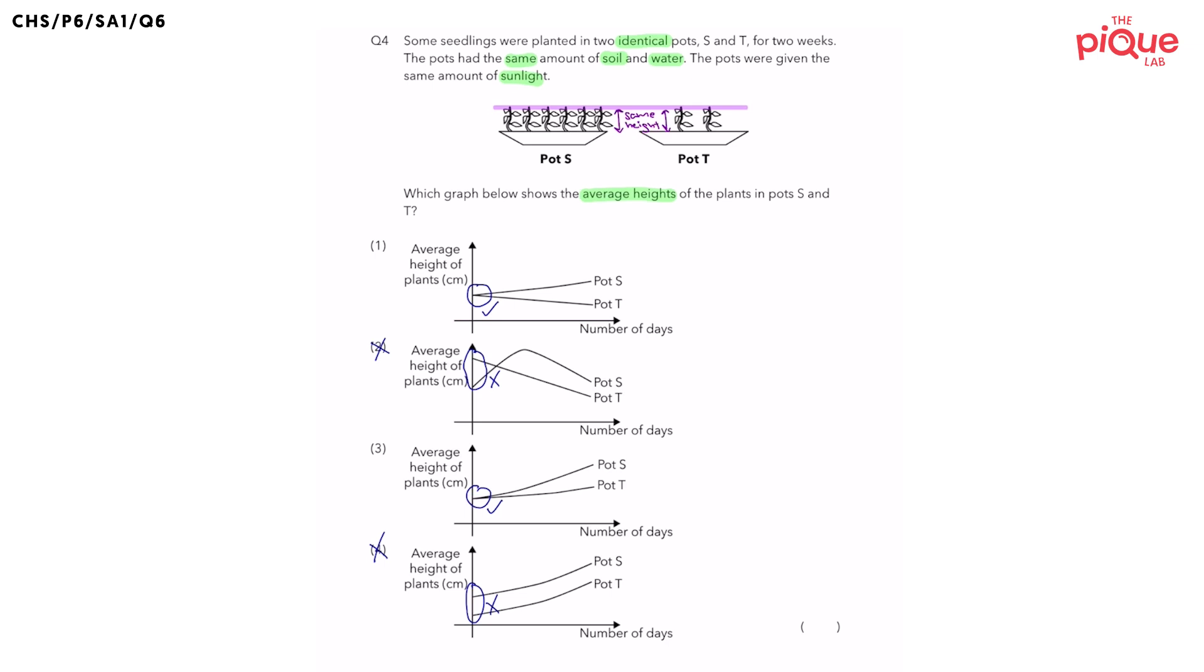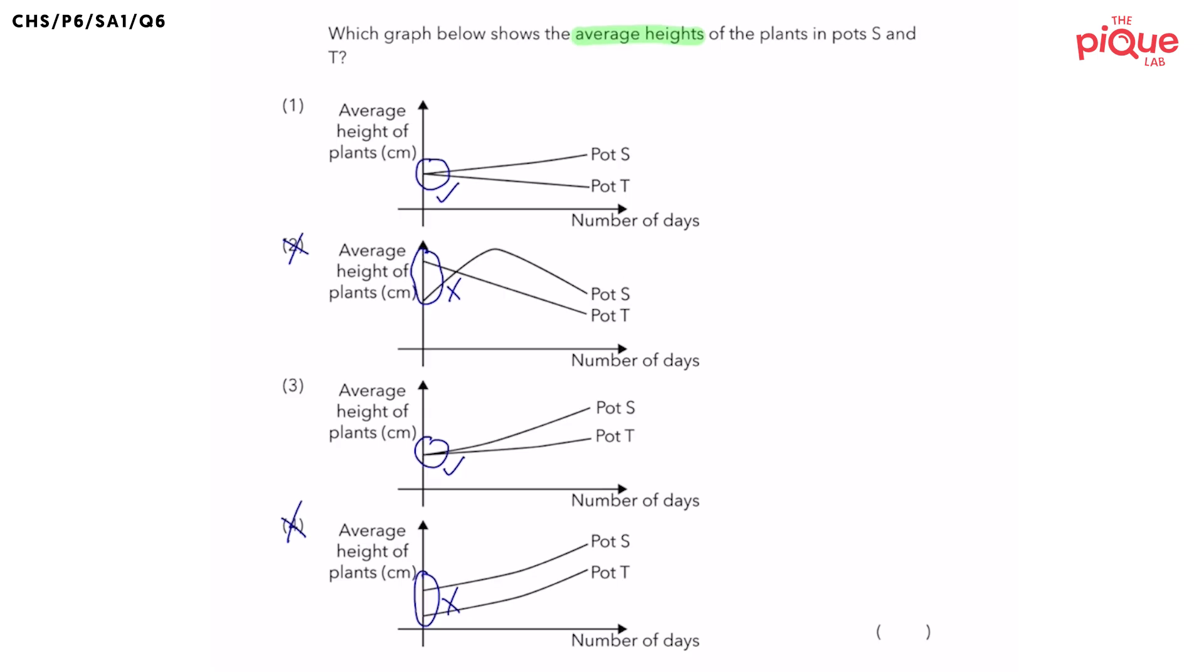The height of the plants should increase over time, right? Because they are seedlings and they are growing taller. So if we look at option one, what do we notice about the average height of plants in pots S?